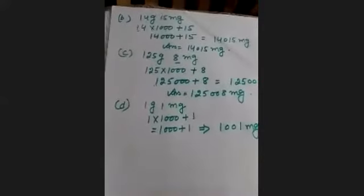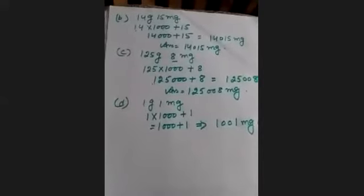Part D: 1 gram and 1 milligram. 1 × 1000 + 1 = 1000 + 1 = 1001 milligrams. Next is Parts E and F — complete those on your fair notebooks after this lecture.